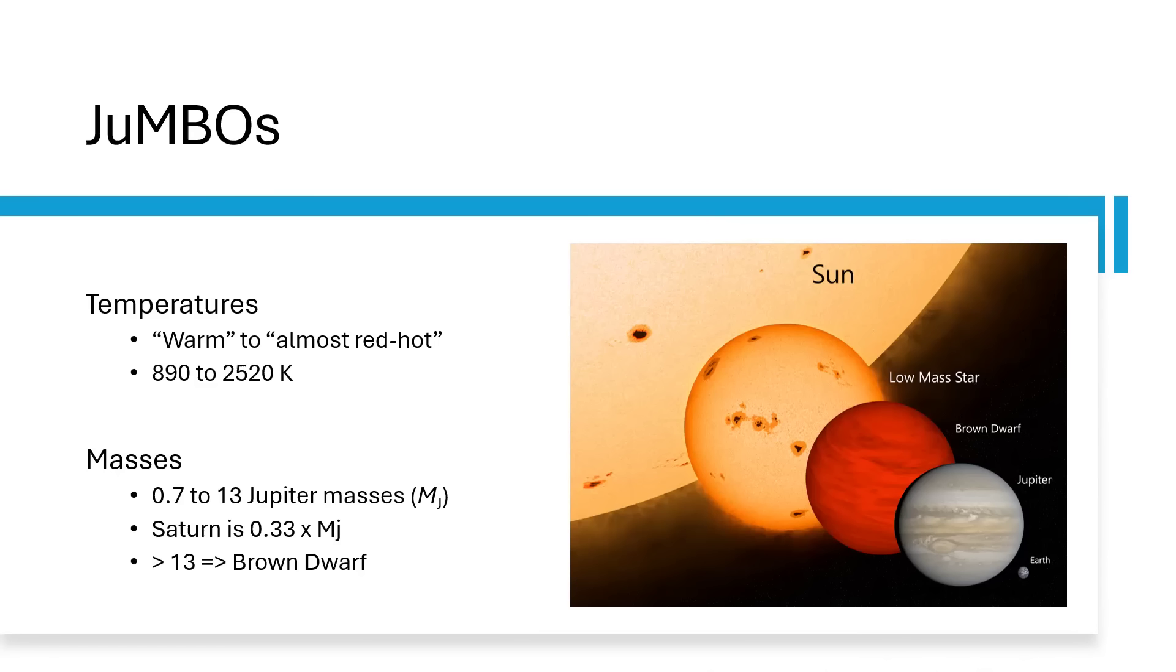For reference, Saturn is about 0.33 of a Jupiter mass, so this is slightly smaller than Jupiter up to considerably larger. The upper bound of 13 is set as a hard limit. Anything greater than 13 times the mass of Jupiter we class as a brown dwarf, all the way up to 75 times when we think that nuclear fusion would be initiated and you would get a red dwarf. Anything below 13 MJ is classed as a subdwarf planet, a gas giant.